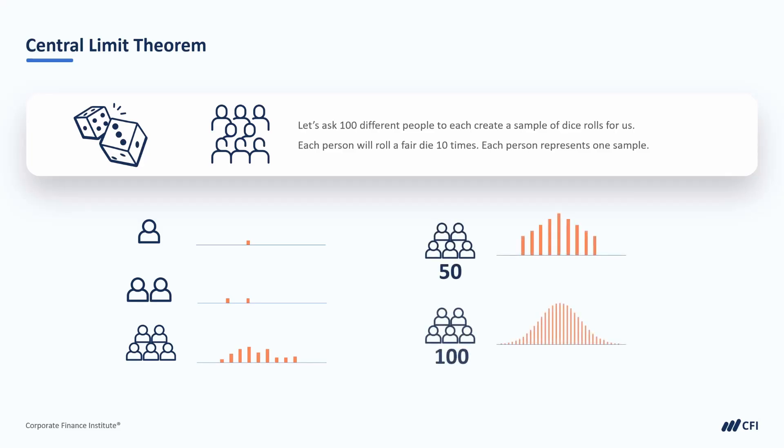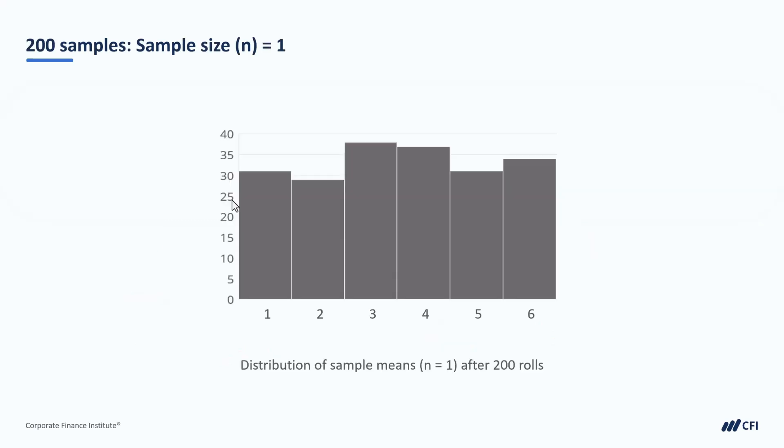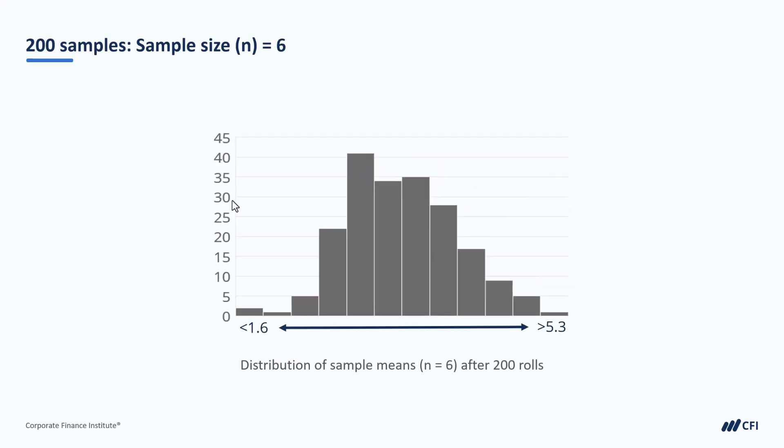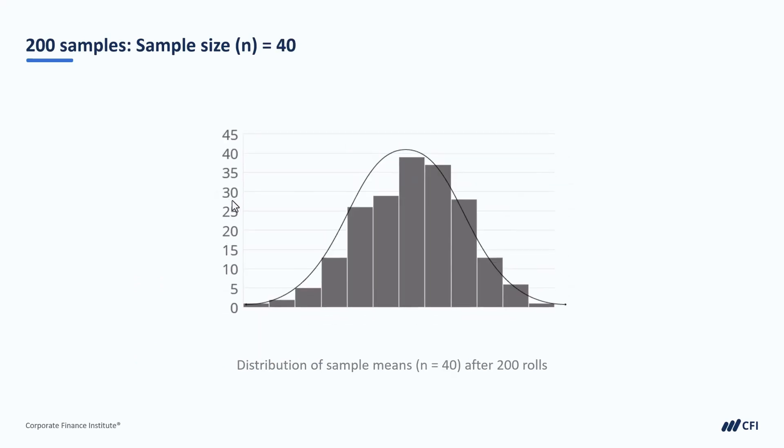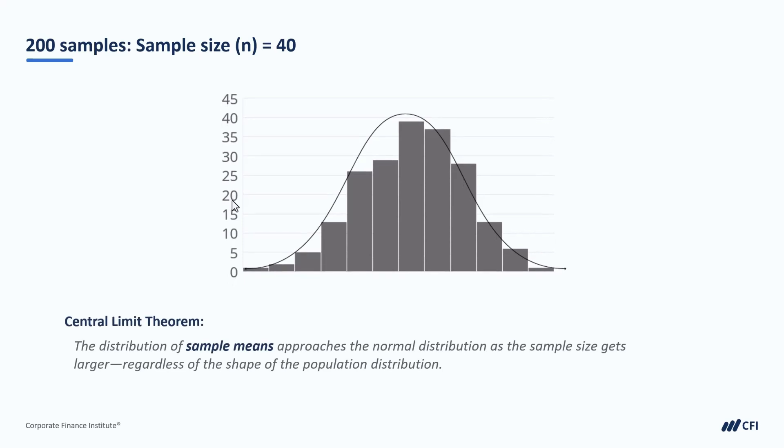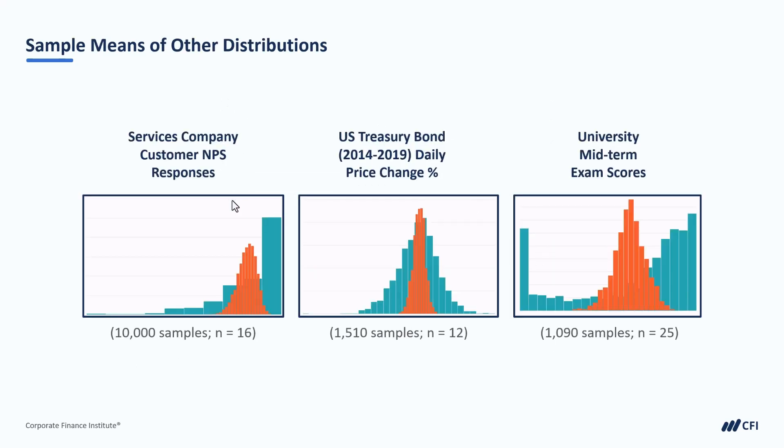As we plot the first few, it can look pretty random. But once we reach about 30 samples, or people in this case, look what happens. The distribution of sample means is starting to approximate a normal distribution. And so this is the central limit theorem. As we increase the number of samples, the distribution of the sample means begin to reflect the normal distribution. And this happens regardless of the shape of the population.